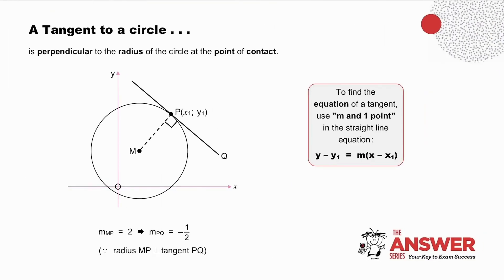A tangent to a circle. From circle geometry, we know that a tangent to a circle is perpendicular to the radius at the point of contact. To find the equation of a tangent, use the gradient and one point in the straight-line equation y minus y₁ equals m(x minus x₁), or y equals mx plus c. If the gradient of the radius is 2, then the gradient of the tangent will be negative 1 over 2.